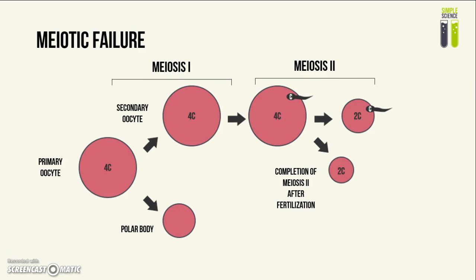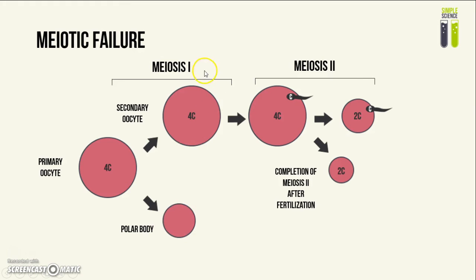Triploidy can also occur because of meiotic failure during gametogenesis. Although this diagram depicts the error in oogenesis, it can also happen during spermatogenesis. You start with a primary oocyte containing four sets of chromatids — a diploid cell. This undergoes meiosis I to produce a secondary oocyte and a polar body. Normally each would have two sets of chromatids. However, all chromosomes move to the secondary oocyte rather than the polar body, making the secondary oocyte diploid with four sets of chromatids. After meiosis II, the polar body has two sets of chromatids and the ovum also has two sets. When the ovum and sperm nuclei fuse, this produces a triploid zygote with three sets of chromatids.